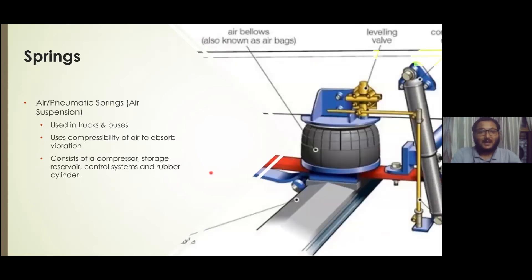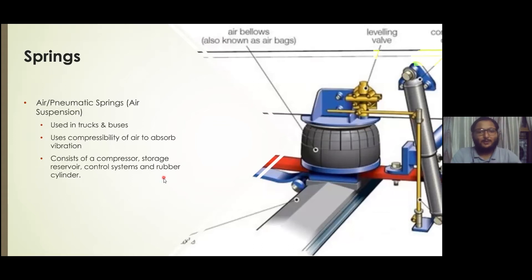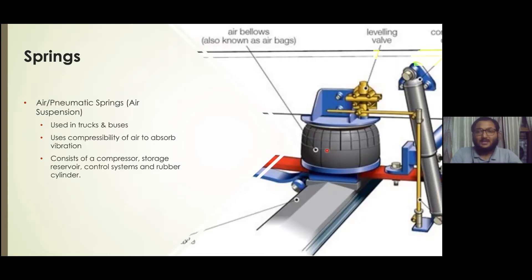Another type of spring, quite different in its kind, is the air or pneumatic spring, which makes up a suspension system known as air suspension. These can be seen mostly in heavy vehicles like trucks and buses and comprise compressors, storage reservoirs, a control system, and a rubber cylinder. As shown in the image, air bags are used and the expansion and compression of the air is used to maintain the ride height of the vehicle.